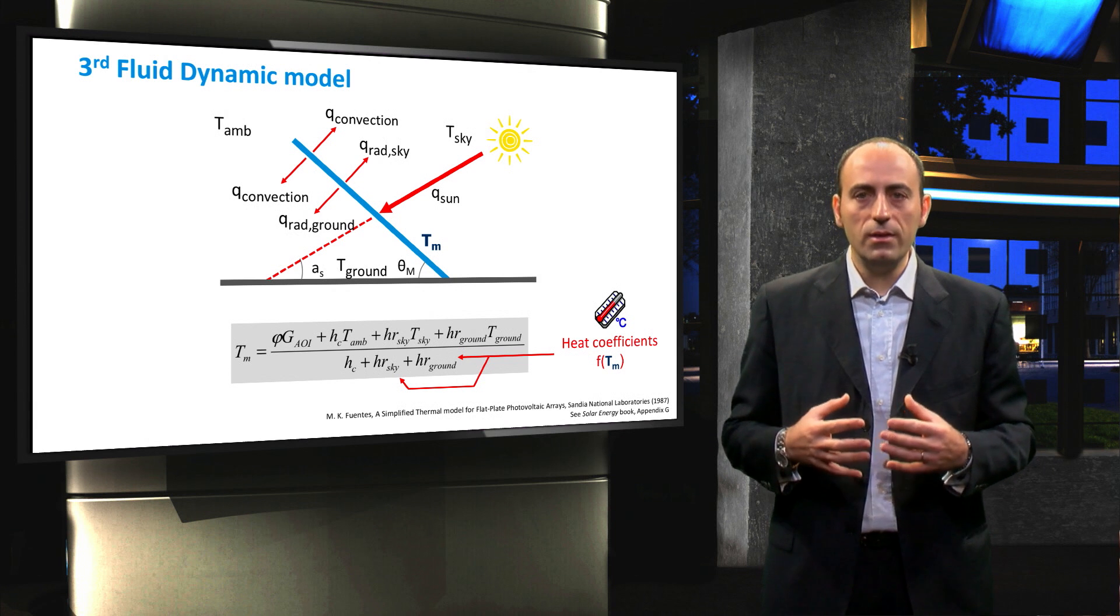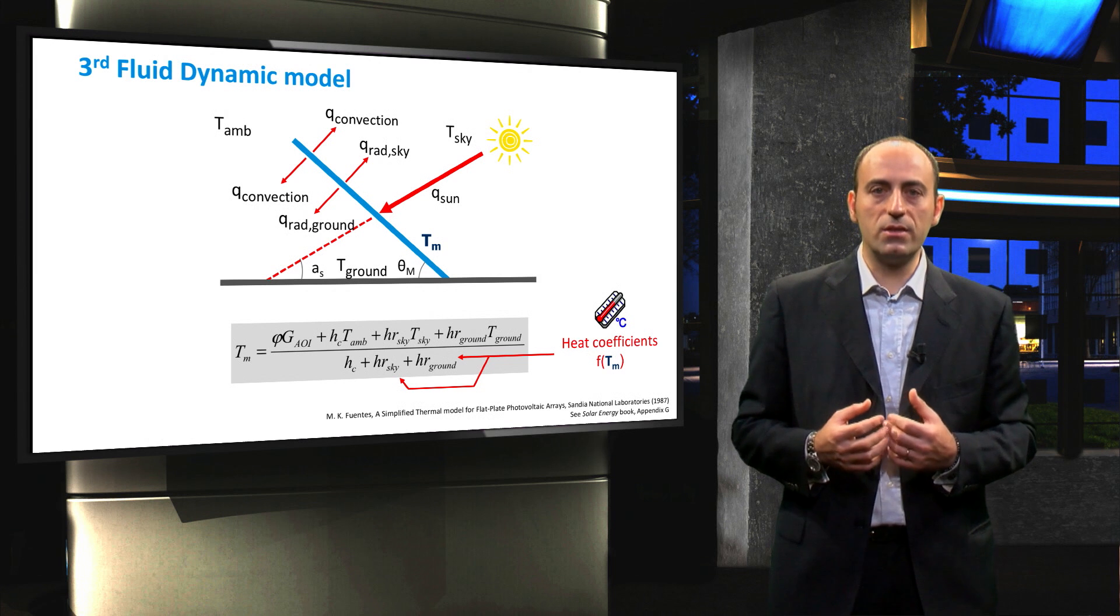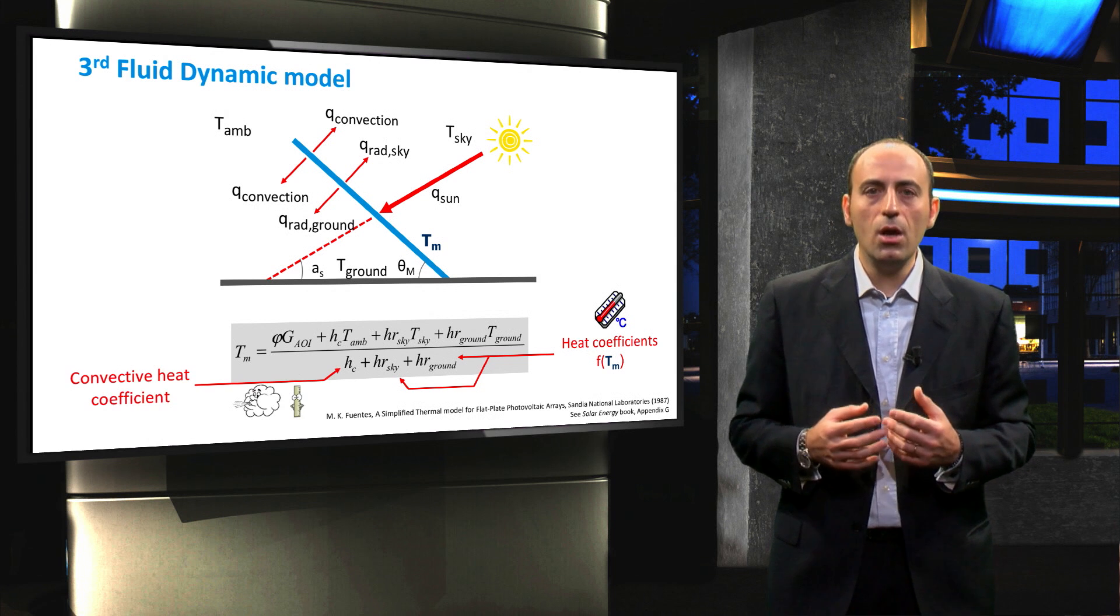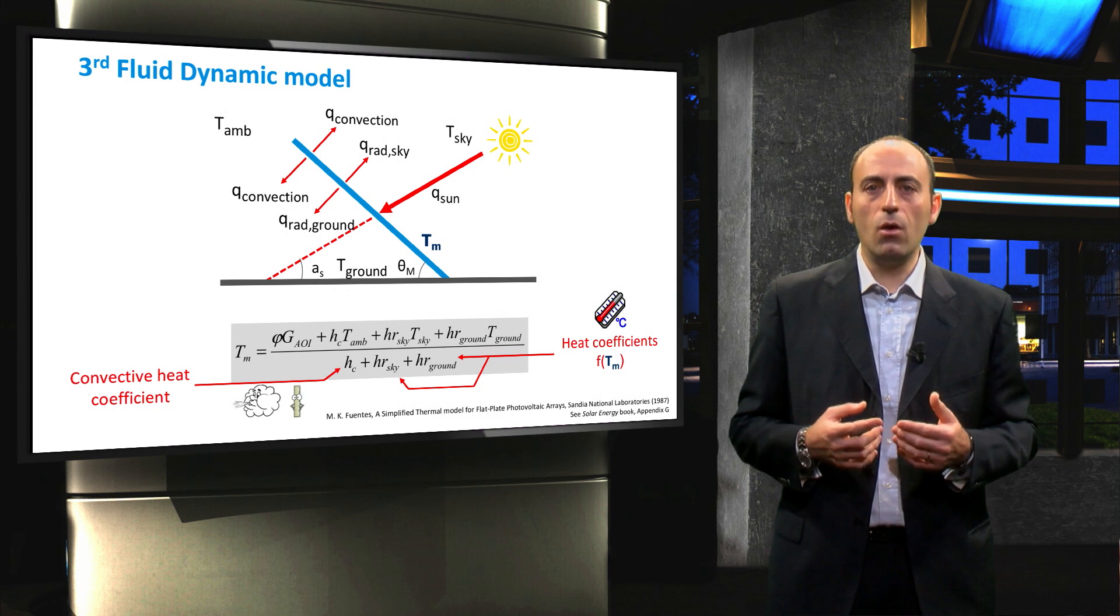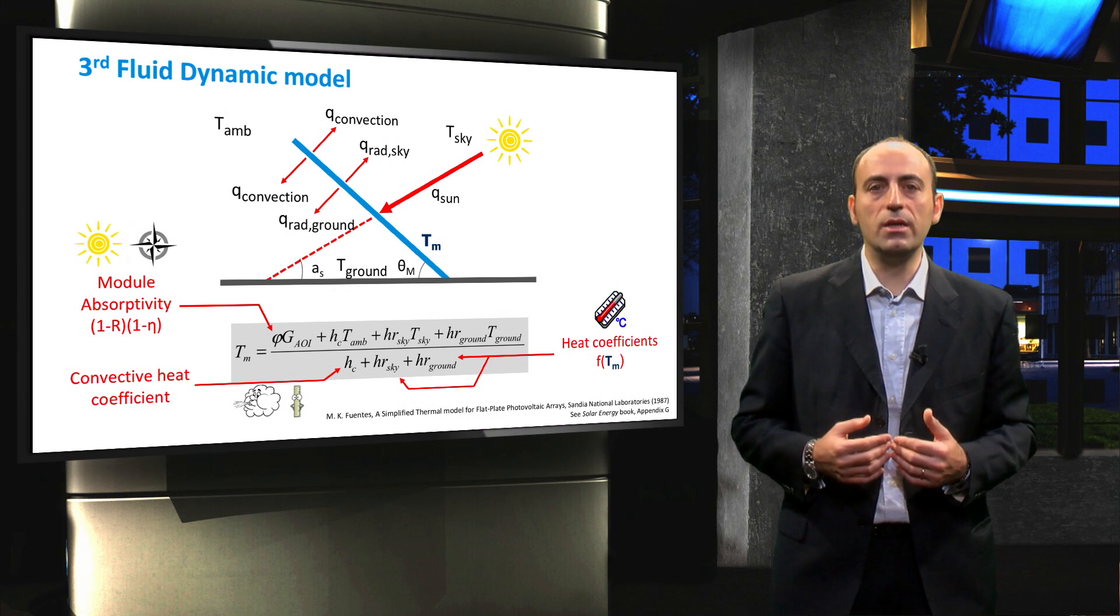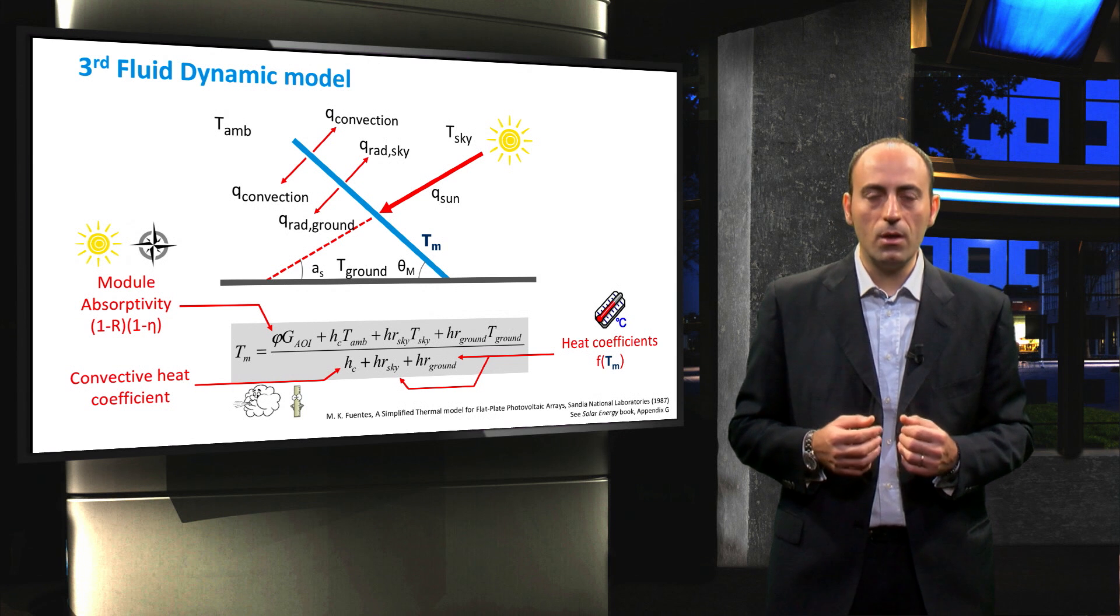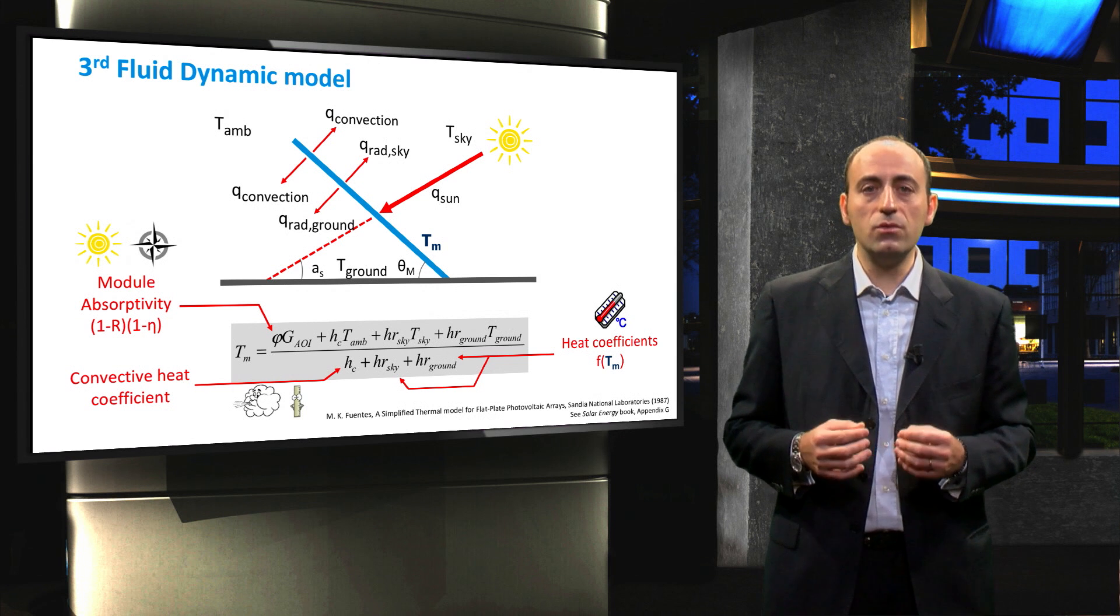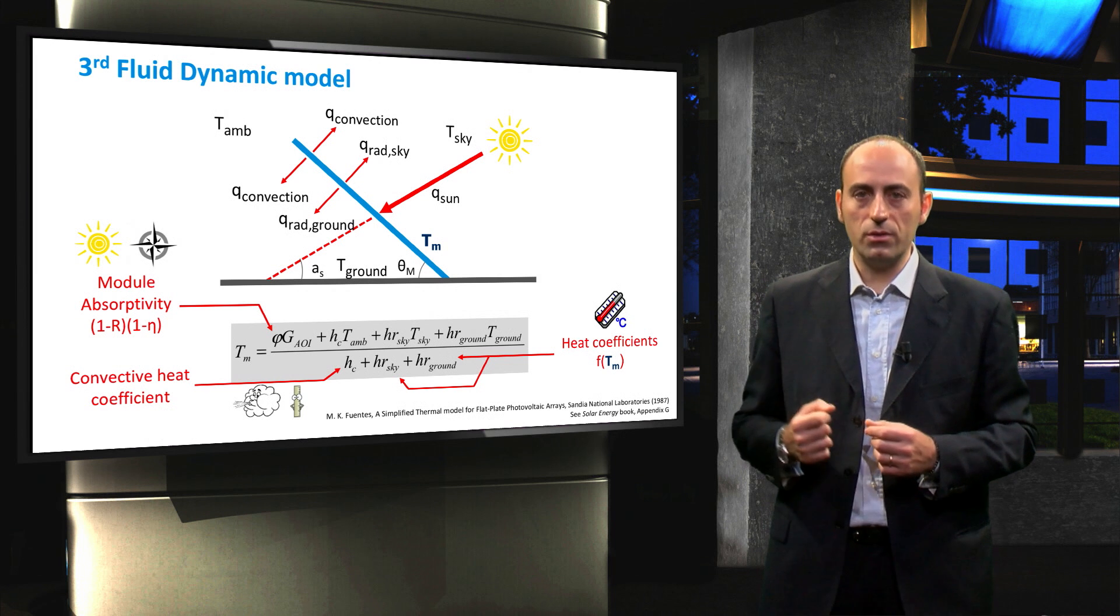Before we can solve it, there are still some unknown variables that must be determined, such as the convective heat exchange, which is a function of the module dimensions and wind speed, and also the module absorptivity, which is defined as the fraction of the incident radiation that is converted into thermal energy into the module. This value is linked to the reflectivity R and efficiency of the module by the equation depicted.